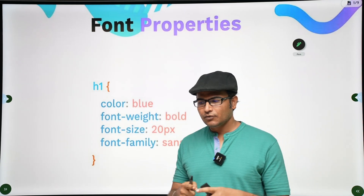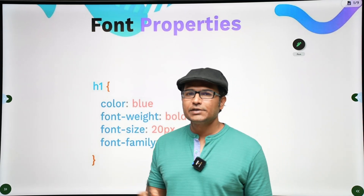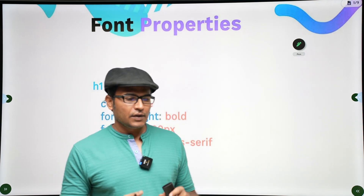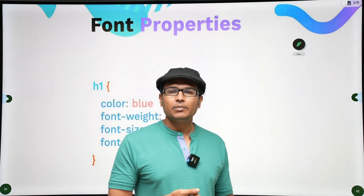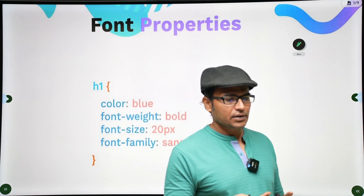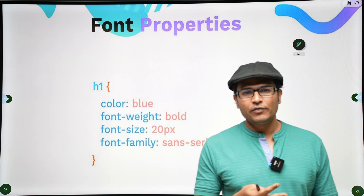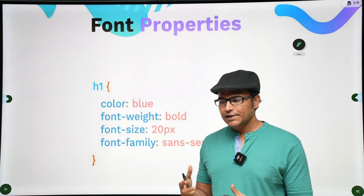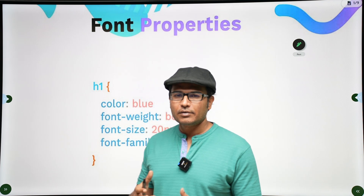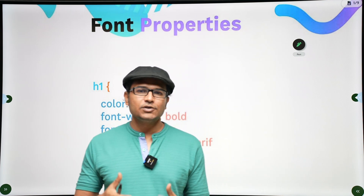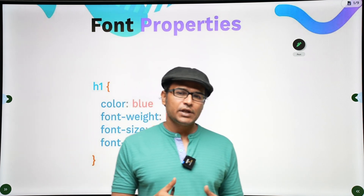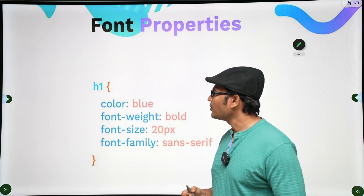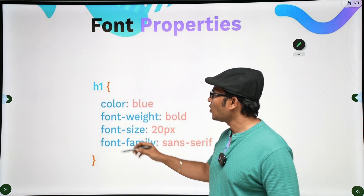When you visit different websites, the font will be different - the size, color, and styling of the font will be different. How do these websites get different colors or different varieties of fonts? It's by using the font properties. Now, what are the font properties?